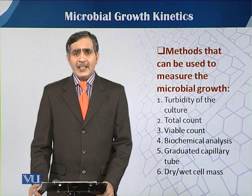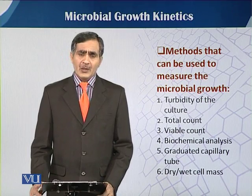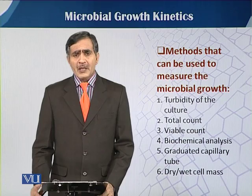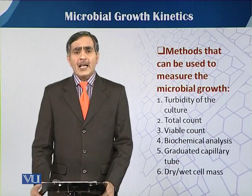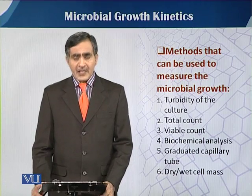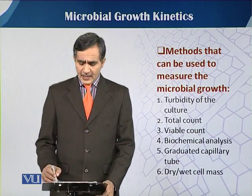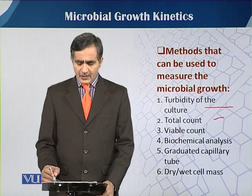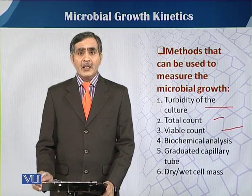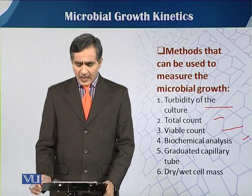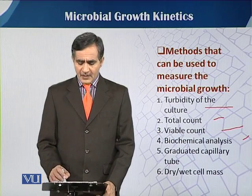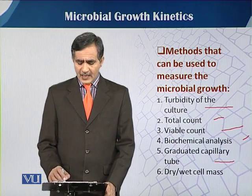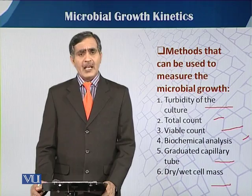There are six different approaches to estimate microbial growth. The first method is the turbidity method, the second is total count, third is viable count, fourth is biochemical analysis, fifth is the physical method called the graduated capillary tube, and the last is dry or wet cell mass estimation.